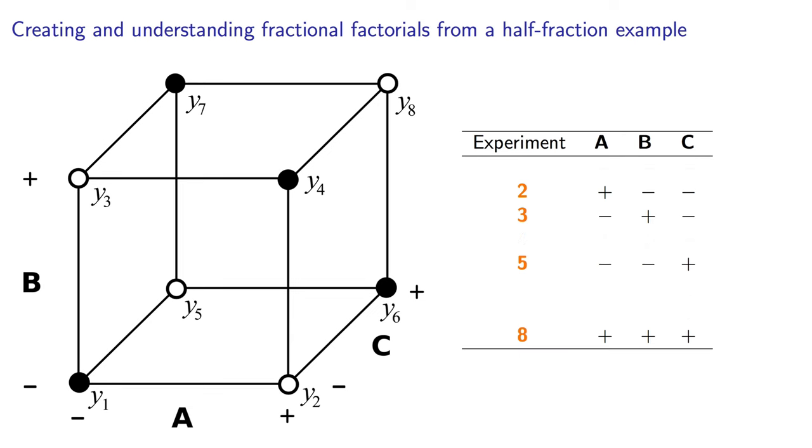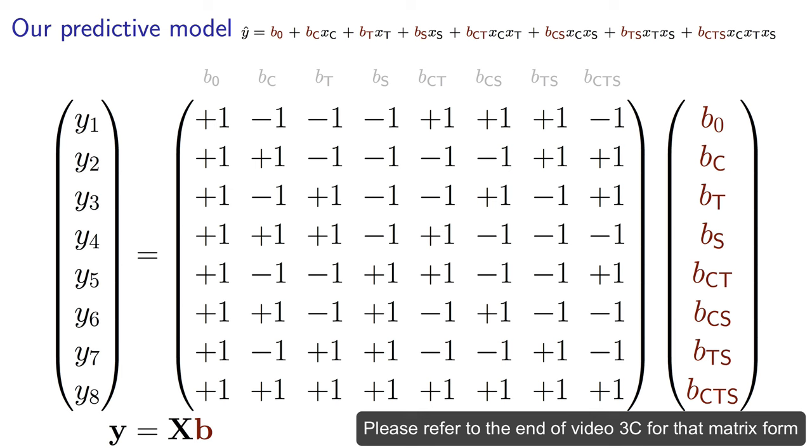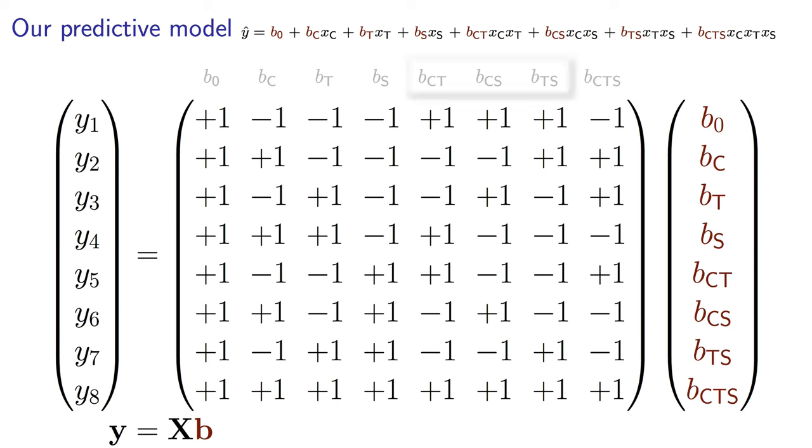So I'm going to remove those other four rows, the experiments we didn't run, and leave only the four behind that we actually ran. Now I'm going to slightly rearrange them for you. Put row 5 first, and then the original row 2 and 3, and then finally the original row 8 becomes our fourth row. Notice that columns A and B are in standard order, and that column C is the product of A and B. In a prior video, I showed you the matrix form for a three-factor system in the context of the wastewater treatment example. The matrix form adds extra columns for the two-factor interactions, and an extra column for the three-factor interaction. There were eight unknowns in that vector B.